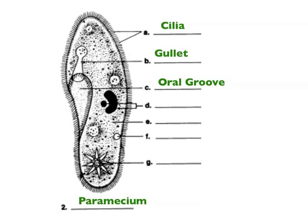At the end of the gullet there's a food vacuole. Food particles fill it up, it separates from the gullet, and moves through the cytoplasm. As it moves through, enzymes are released into the vacuole to break down whatever was eaten. The nutrients are then absorbed into the cytoplasm. A new vacuole forms at the end of the gullet. That's how food gets into the paramecium and how it gets digested.